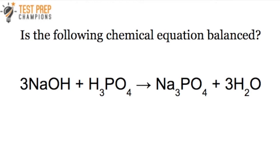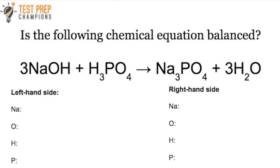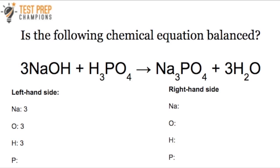The next practice: is the following chemical equation balanced? I'll count everything up on both sides. On the left with NaOH, I get three Na, three O's, and three H's. Adding H3PO4 gives four more oxygens, three more H's, and one P. Totals on the left: Na=3, O=7, H=6, P=1. On the right starting with Na3PO4 and adding 3H2O — adding them up, we see that it is balanced. So the answer is yes.